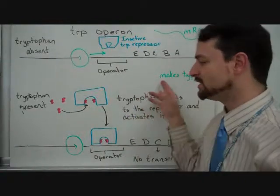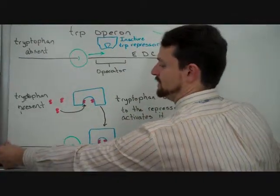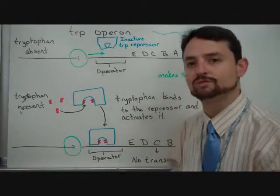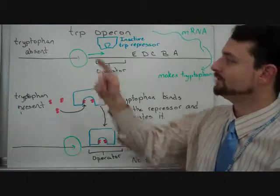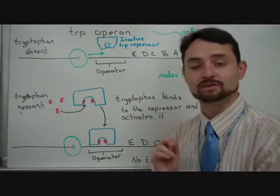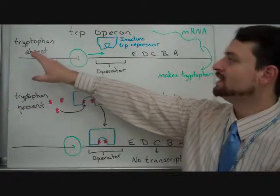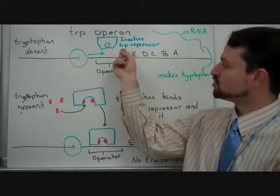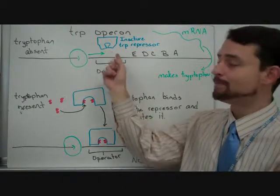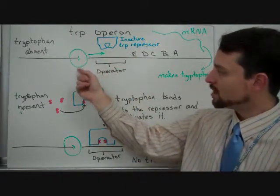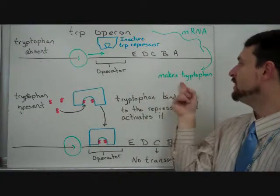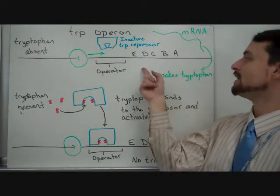The last one is called the trp operon. It deals with the presence of tryptophan. When tryptophan is absent, tryptophan is an important amino acid that the cell needs. When tryptophan is absent, the trp repressor does not bind to the operator. The RNA polymerase proceeds, and you get mRNA.